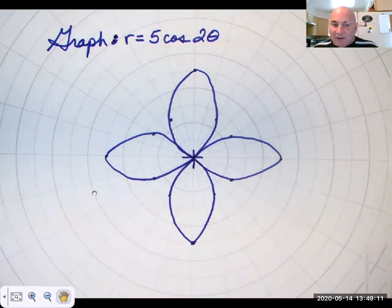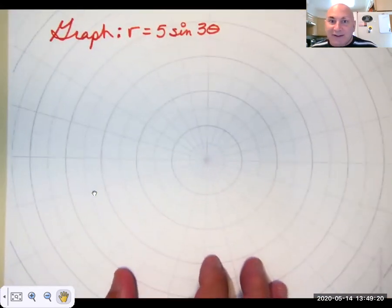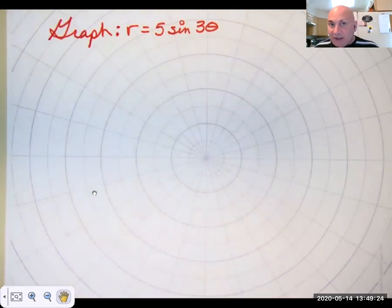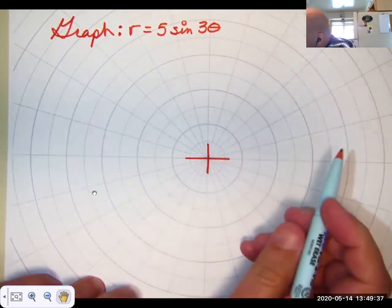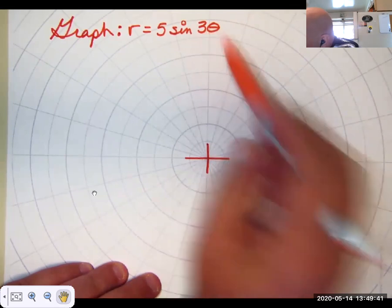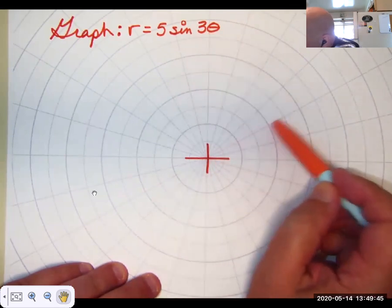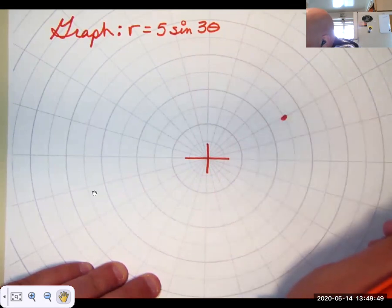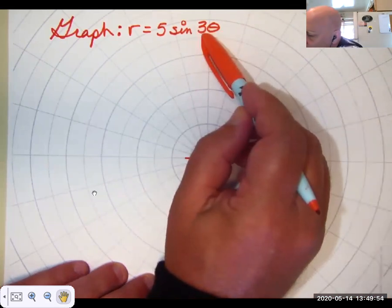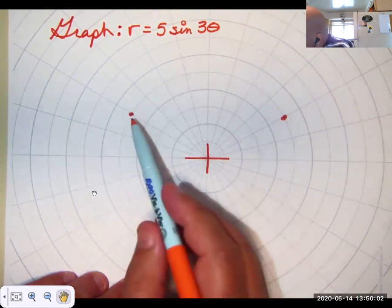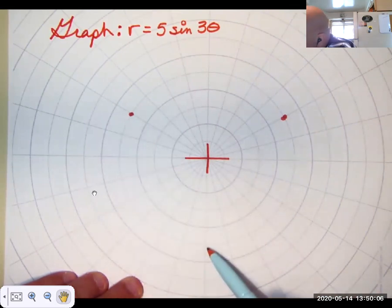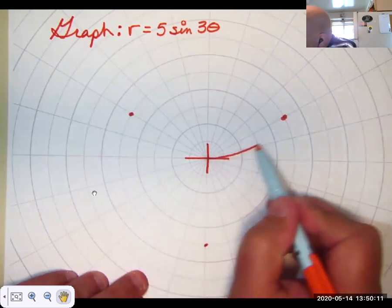And there we've graphed the rose r equals 5 cosine 2 theta. It's not perfect, but it'll do. Now let's look at the graph of r equals 5 sine of 3 theta. In this case, n is odd. So it's only going to have three petals. And 3 times 30 is 90. So I'm going to have a leaf or a petal centered at 30 degrees. So 1, 2, 3, 4, 5. It's going to be centered here. And so that's at 30 degrees. They're going to be 120 degrees apart. So the next one's going to be at 150 degrees. 1, 2, 3, 4, 5. And then 150 plus 120 is 270. So that last petal would be down here. And this graph is going to look something like this.